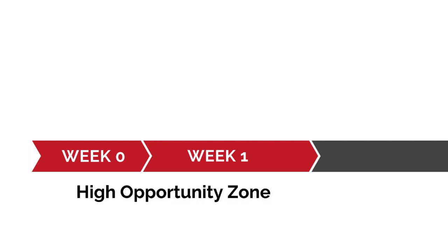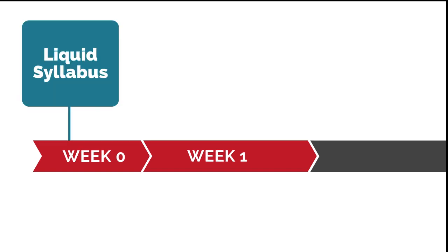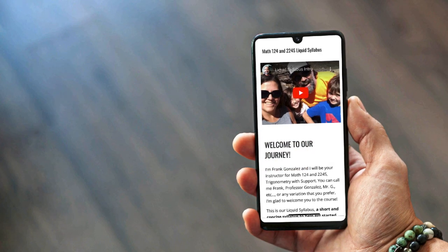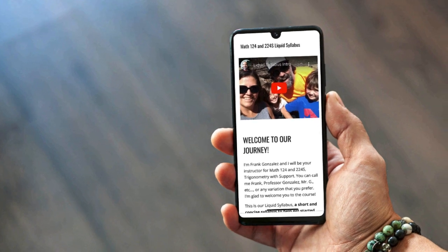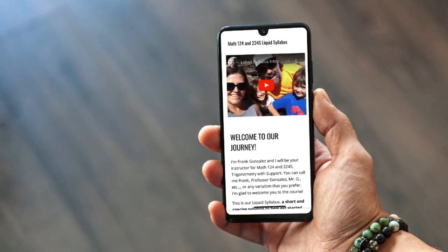Weeks zero and one of an online class are a high opportunity zone for cultivating a sense of belonging. The liquid syllabus supports your students by providing a welcoming first step before your class even starts. Over the coming weeks you'll develop a single public web page that will welcome all of your students and begin to establish a relationship with them based on trust.